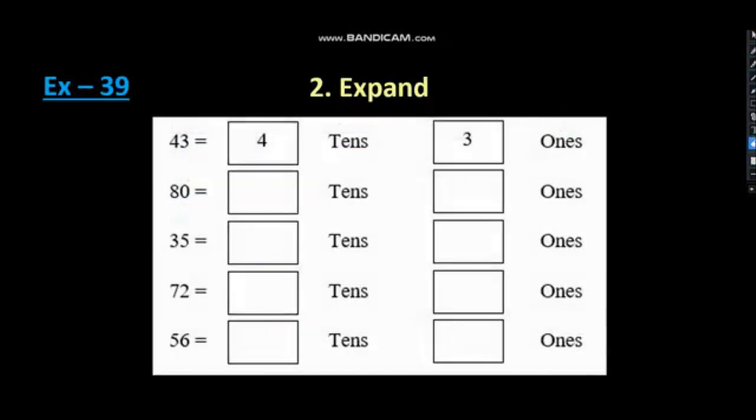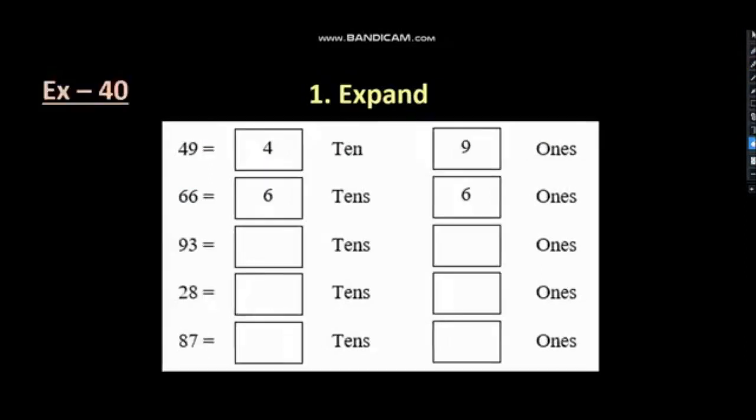Now, we will go to exercise 40. Here also we have expand. Just like exercise 39. So, what do you have to do here? Remember, 49. We have here 49. So, we have to place them in a place value, right? 4 will go to tens place. And, 9 will go to ones place.